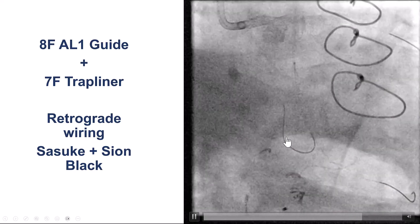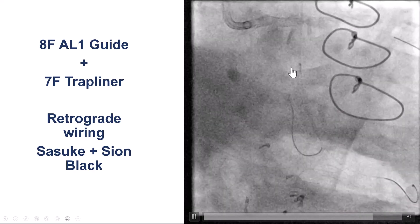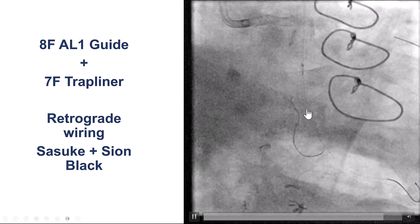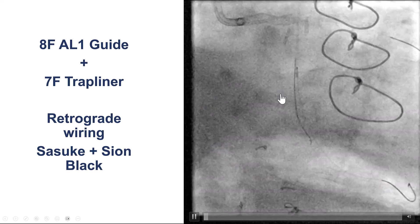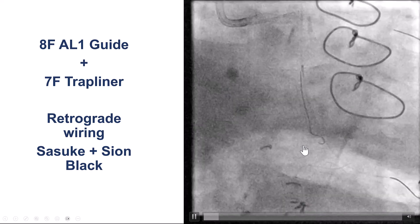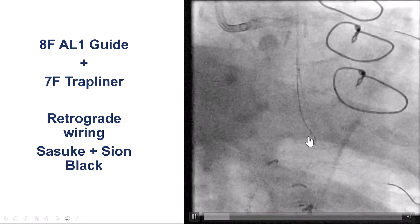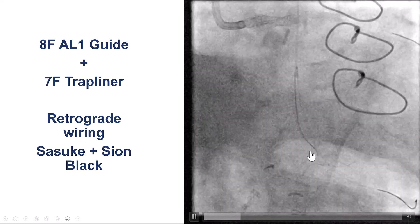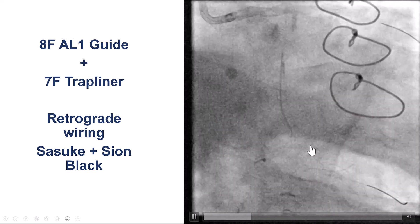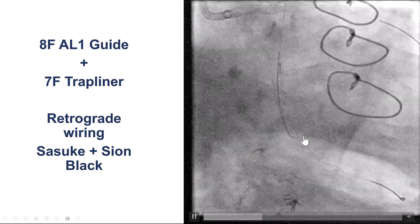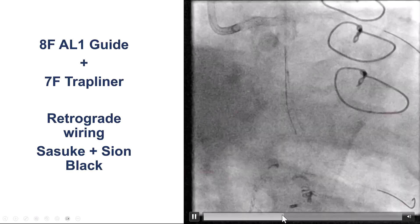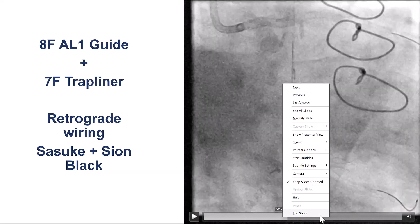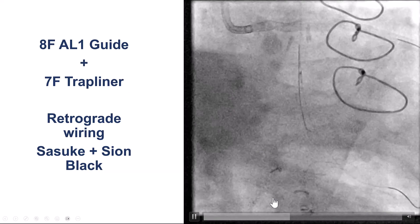We then used the Sion Black, along with the Sasuke microcatheter, to advance the guidewire retrogradely. The Sion Black went well into the native obtuse marginal, and then retrograde over to the circumflex.